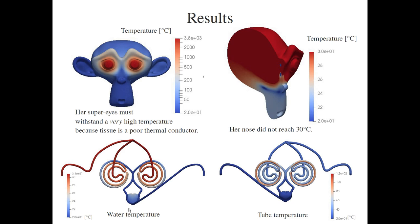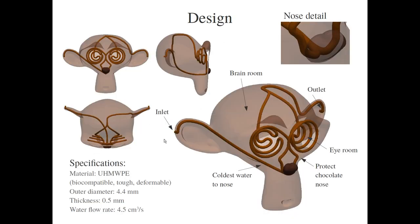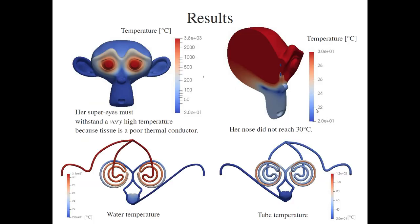These are his final results of his steady-state conjugate heat transfer simulation. The temperature of the eyes is very high, but he managed to lower the temperature of the nose below 30 degrees Celsius. Here you see the water temperature and the tube temperature as well. The eyes are really hot, and on the left hand side you have the inlet and on the right hand side you have the outlet of the tubing.